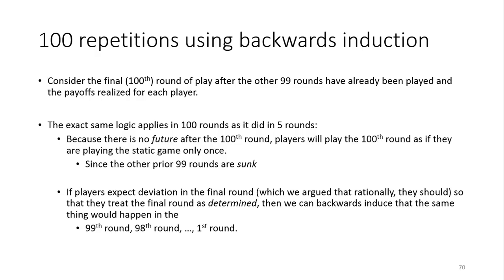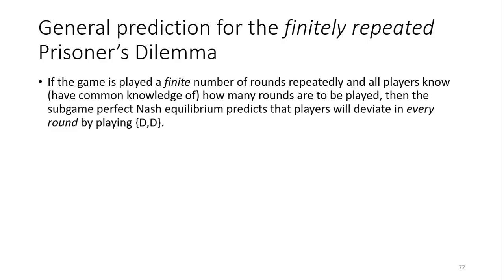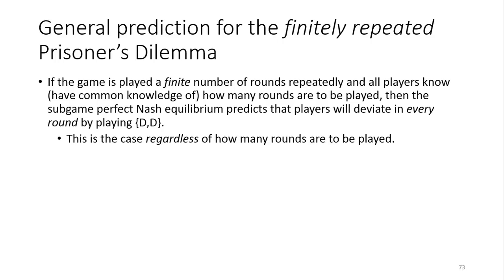If players expect deviation in the final round — which rationally they should given how the static game works — then we can backwards induce the same thing would happen in all previous rounds. The general prediction for the finitely repeated prisoner's dilemma is: if you play this game for a finite number of rounds — five rounds, ten rounds, a hundred rounds, a million rounds — the game-theoretic outcome is that players deviate and play DD in every single period. This is very, very inefficient, regardless of how many rounds are played.